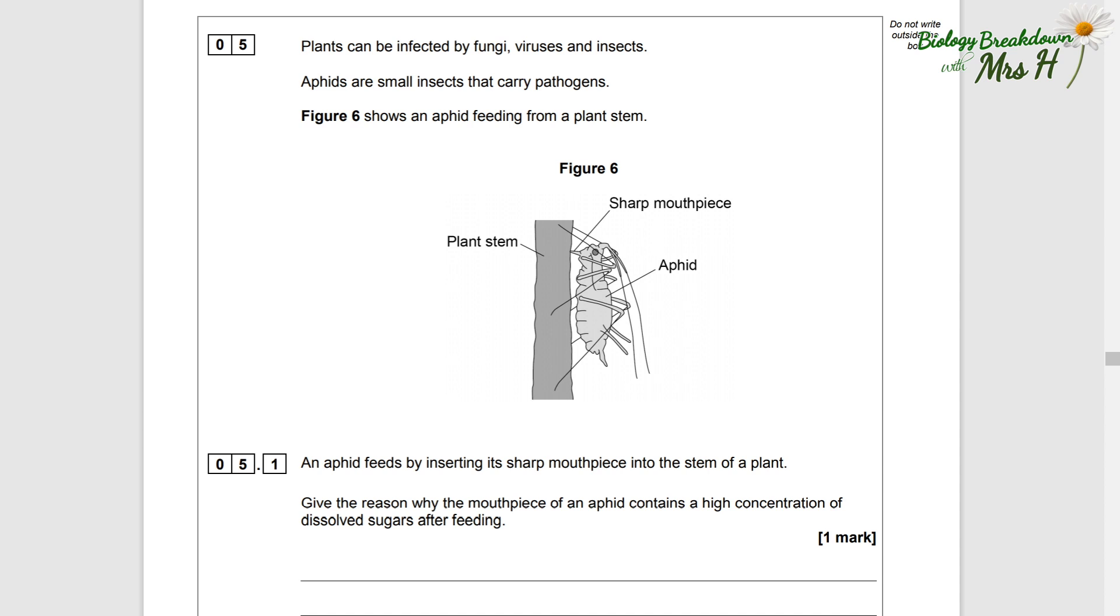Question number five: Plants can be infected by fungi, viruses, and insects. Aphids are small insects that carry pathogens. Figure six shows an aphid feeding from a plant stem. 5.1: An aphid feeds by inserting its sharp mouthpiece into the stem of a plant. Give the reason why the mouthpiece of an aphid contains a high concentration of dissolved sugars after feeding.